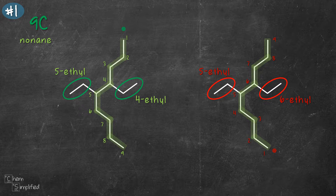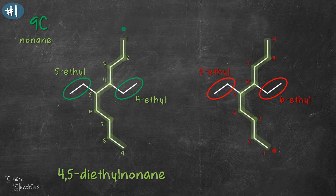So which numbering set should we go with? We always want to start counting from the end closest to the substituent. In this case it's the numbering set on the left — the one in green — because 4,5 is a lower numbering set than 5,6. So the name for this compound is 4,5-diethylnonane. It's nonane because our longest chain has nine carbons, and we put 'di' in front of ethyl to indicate two ethyl groups, placed at carbons 4 and 5.